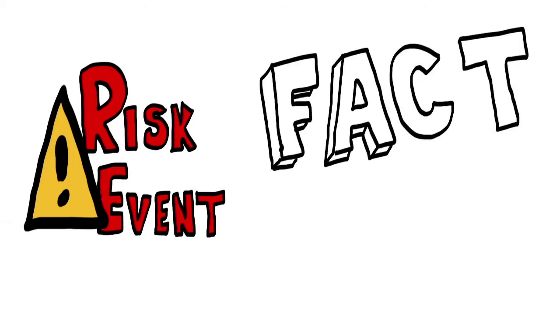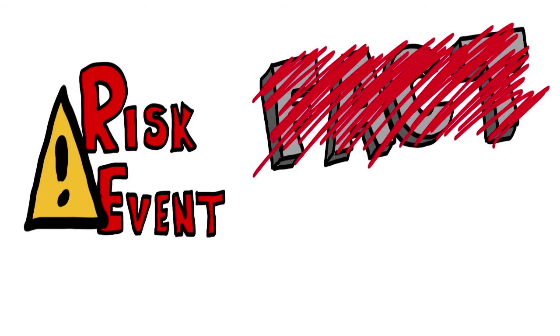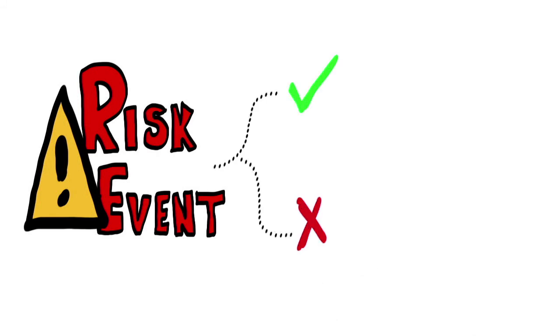Risk events, on the other hand, are not facts, but rather possibilities. We say that a risk event may or may not occur, and then it occurs with some probability.